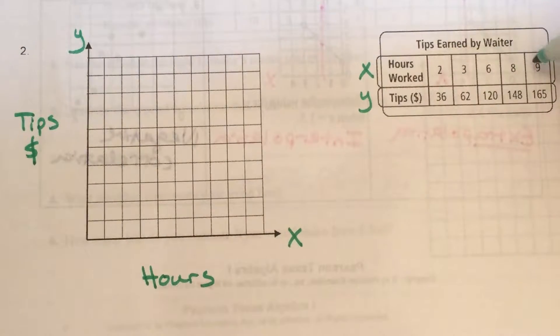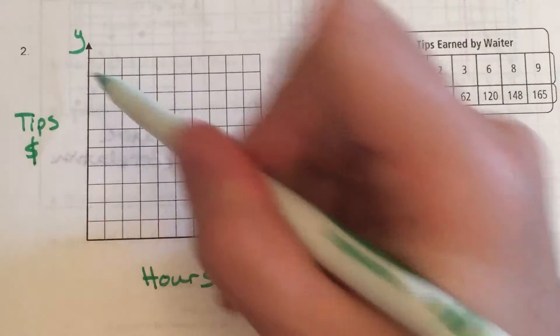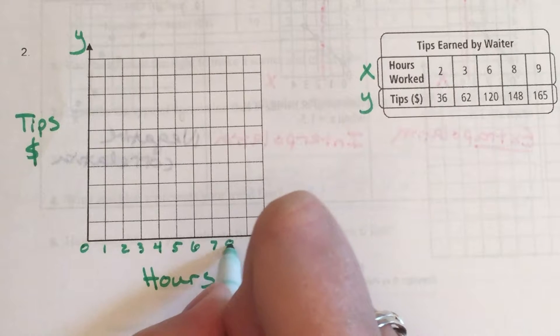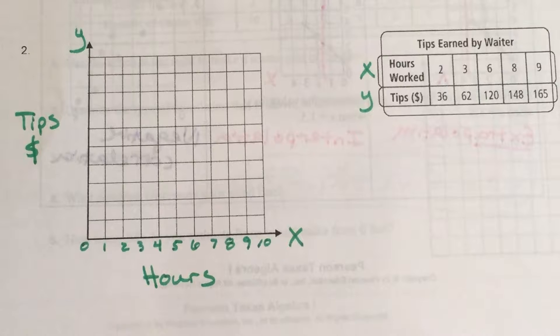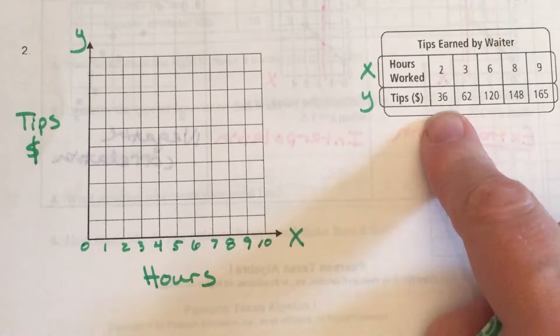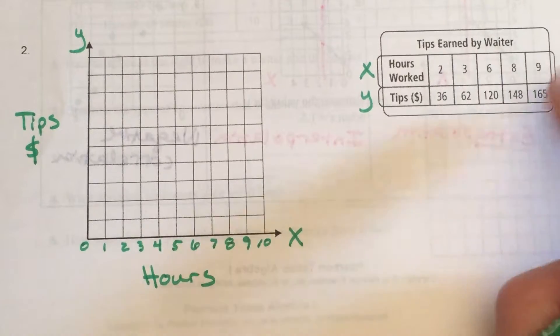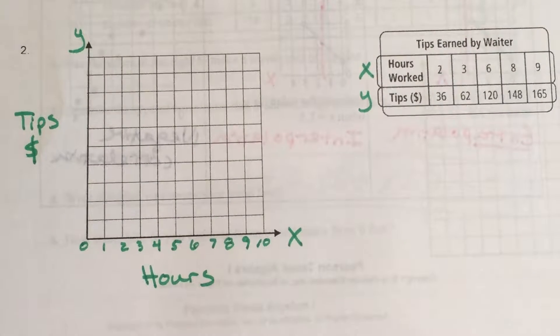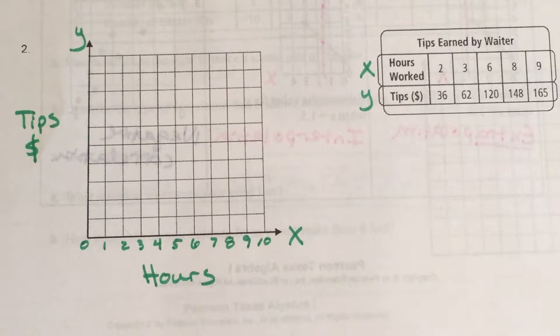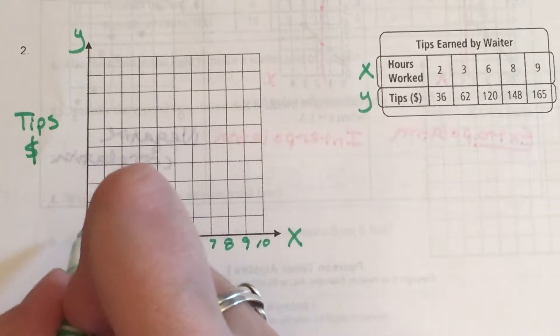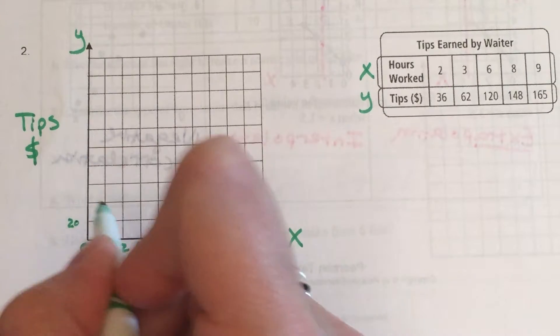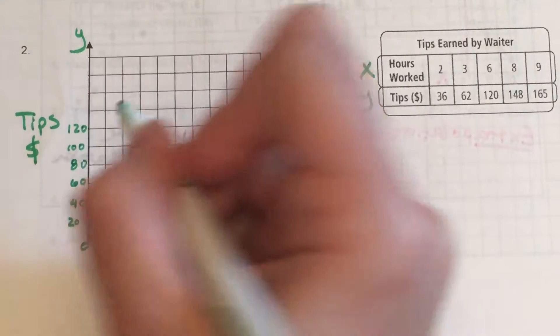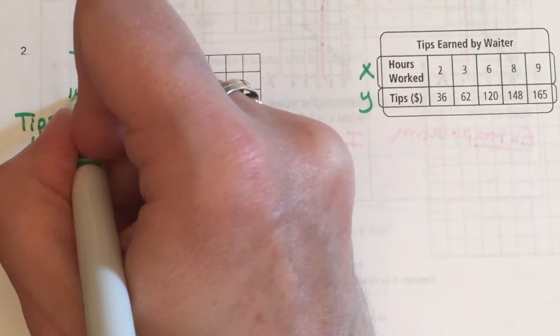Okay. So my hours range from two to nine. And again, this is a 10 by 10 square. So we can just count off by ones, because that fit perfectly. Beautifully. All right. Now my money, that's ranging from $36 up to $165. I want to work that night. Yeah. Anyways. So I have a 10 unit square. How could I make $165 space out nicely on a 10 unit square? Yeah. Let's count by $20. Because 20 times 10 will give me $200. So that way, all of my data is going to fit on my graph. And each row has a nice even distribution about it.